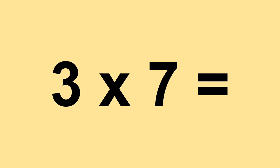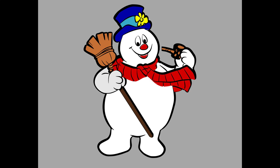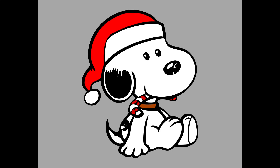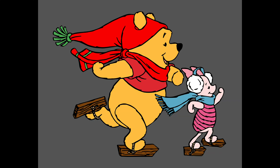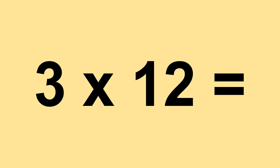Three times seven equals twenty-one. Three times eight equals twenty-one. Three times nine equals twenty-seven. Three times ten equals thirty. Three times eleven equals thirty-three. Three times twelve equals thirty-six.